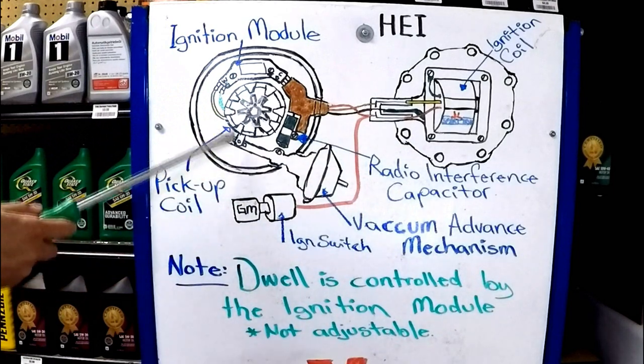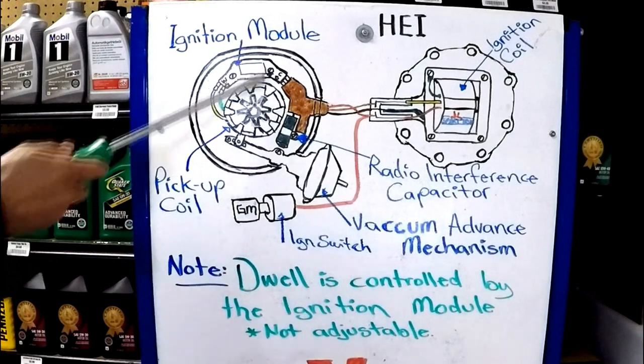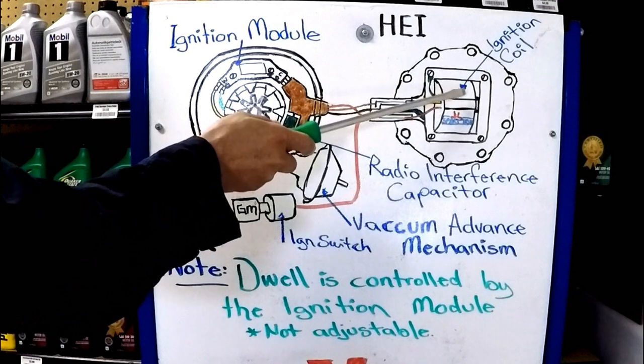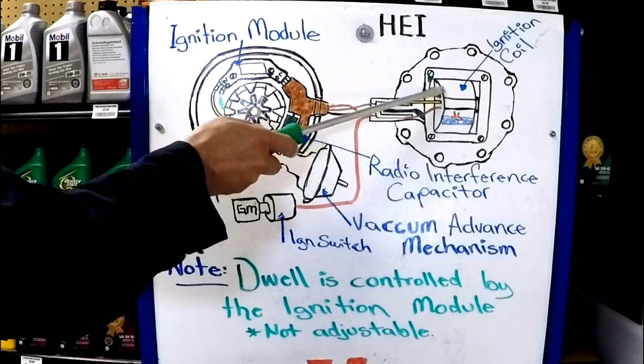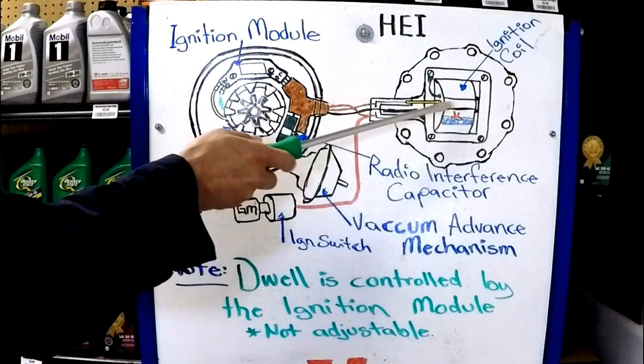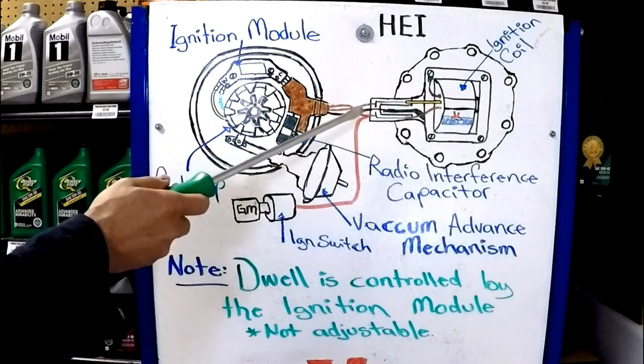Here inside the distributor you have the pickup coil, you have the vacuum advance mechanism, the ignition module that's inside. You have a radio interference capacitor, and the ignition coil is mounted on top of the distributor cap. There's a plastic cover that covers the coil. Obviously the drawing shows it removed, so it's easy to see.